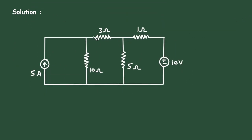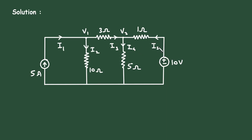First of all, let's say this is node 1 with voltage V1 and this is node 2 with voltage V2. Let's say this is current I1, this is current I2, this is current I3, this is current I4, and this is current I5 — all the currents toward the reference node. This is the reference node with zero voltage.